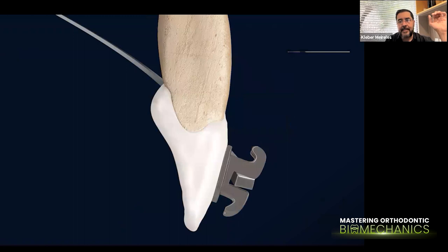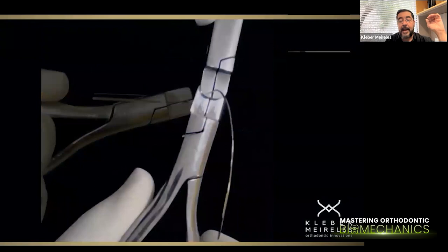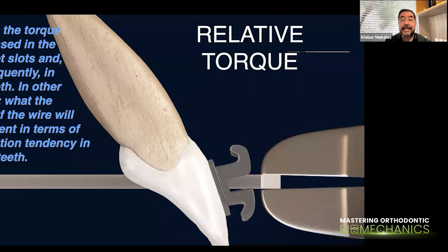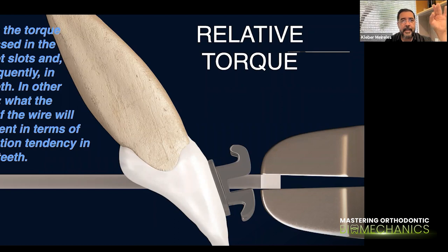This is a very good example of how torques may have different outcomes depending on the inclination of the teeth in which we are inserting the real torque. The relative torque is the torque that is expressed in the bracket slot and consequently in the teeth — in other words, what the twist of the wire will represent in terms of inclination tendency. Understanding the relative torque is most important because it will change or keep the inclination of those teeth in which we insert the rectangular wire.